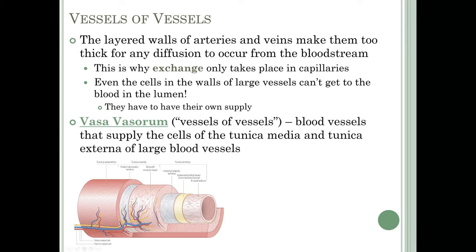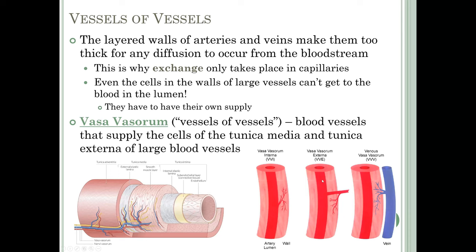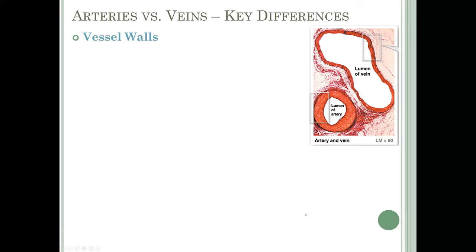Here is a cutaway view showing the different layers: tunica externa — also called the adventitia — tunica media, and tunica intima. The walls are too thick for cells out here to get to the blood in the lumen, so they have their own blood supply: the vasa vasorum, shown here as an artery and a vein, as well as a nerve called the nervi vasorum. The vasa vasorum may come from branches from the lumen on the inside, or it may be an external supply.